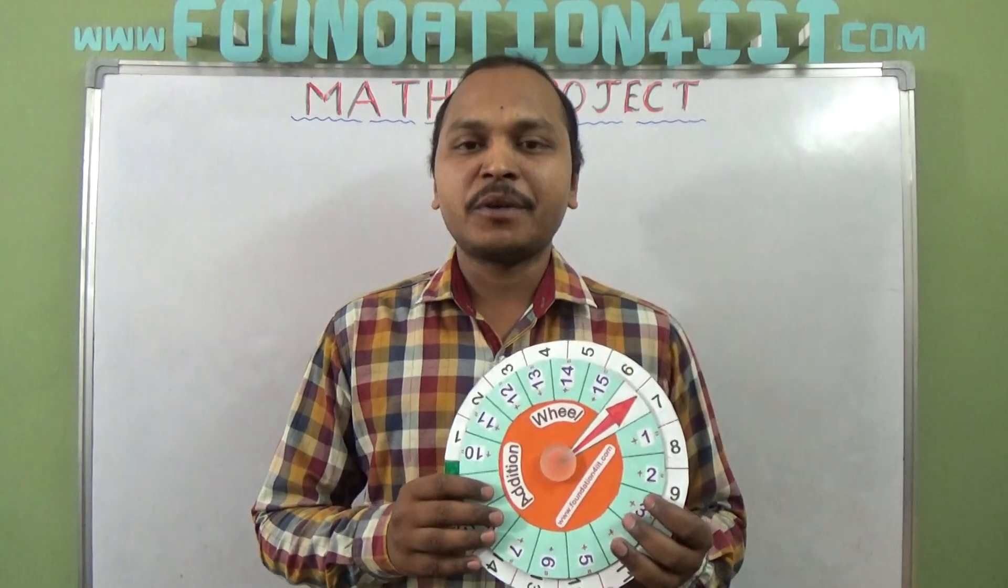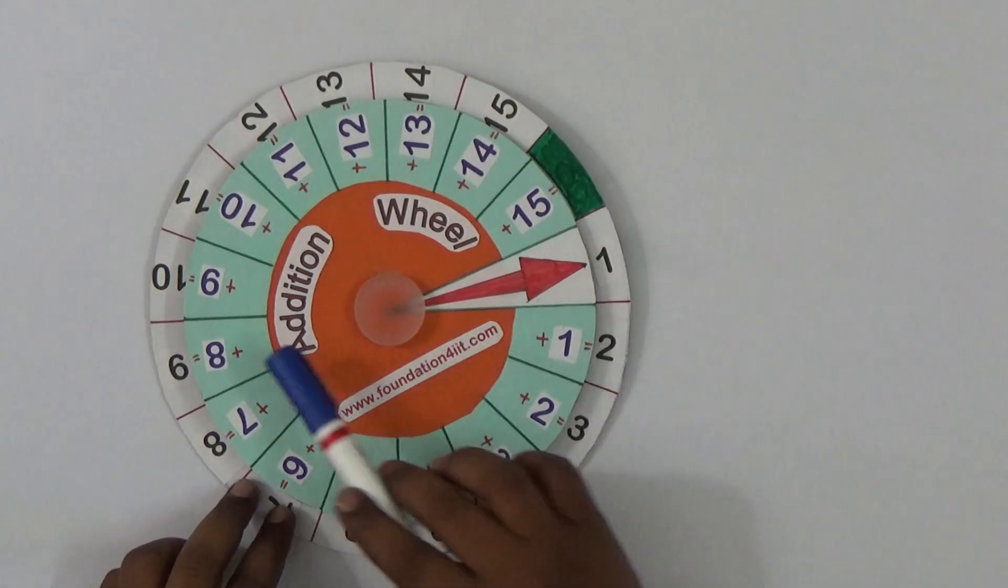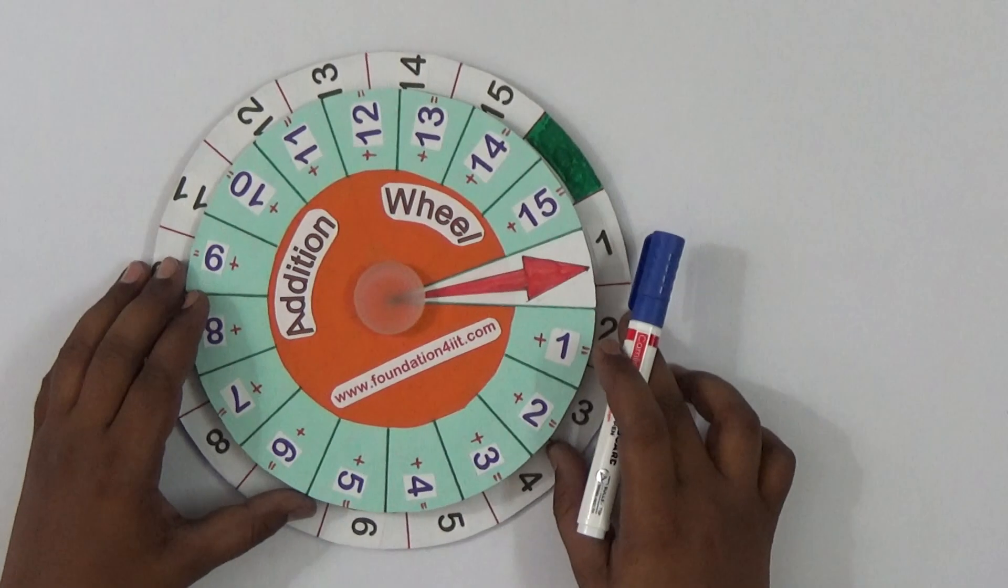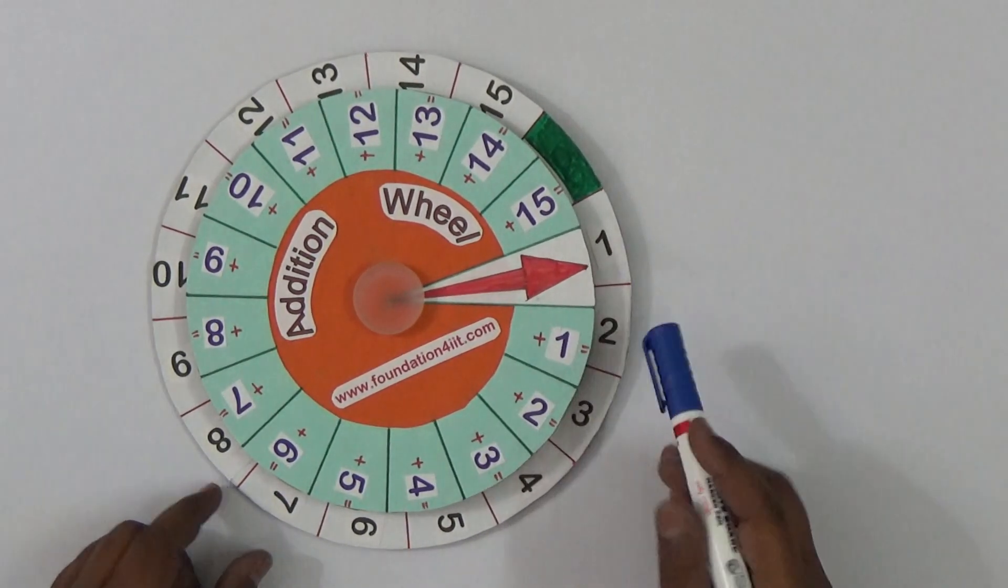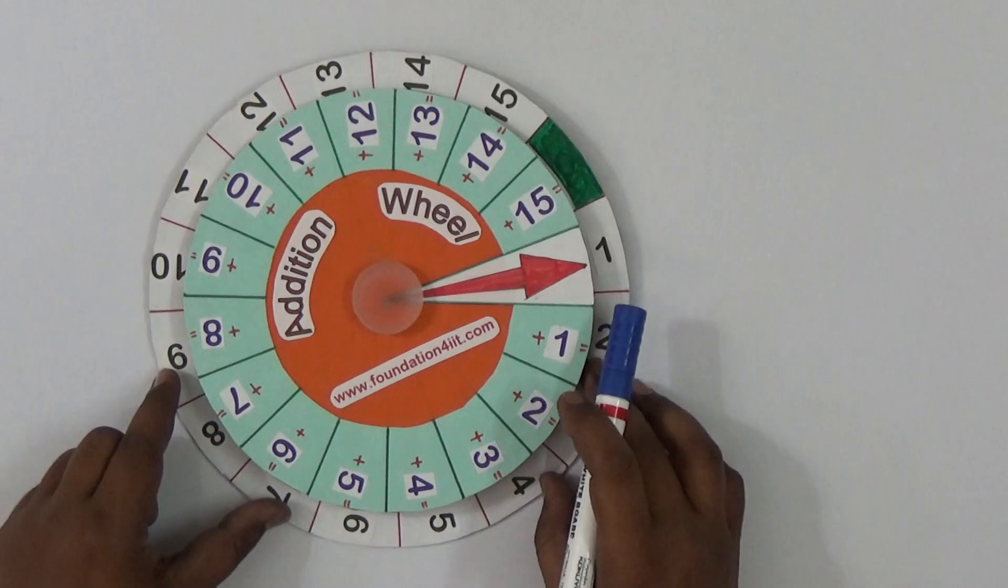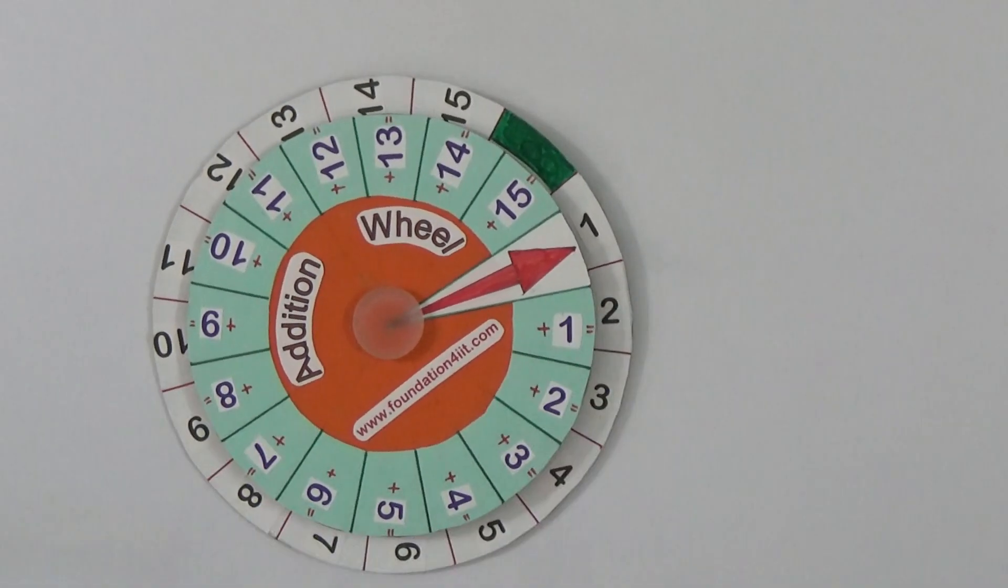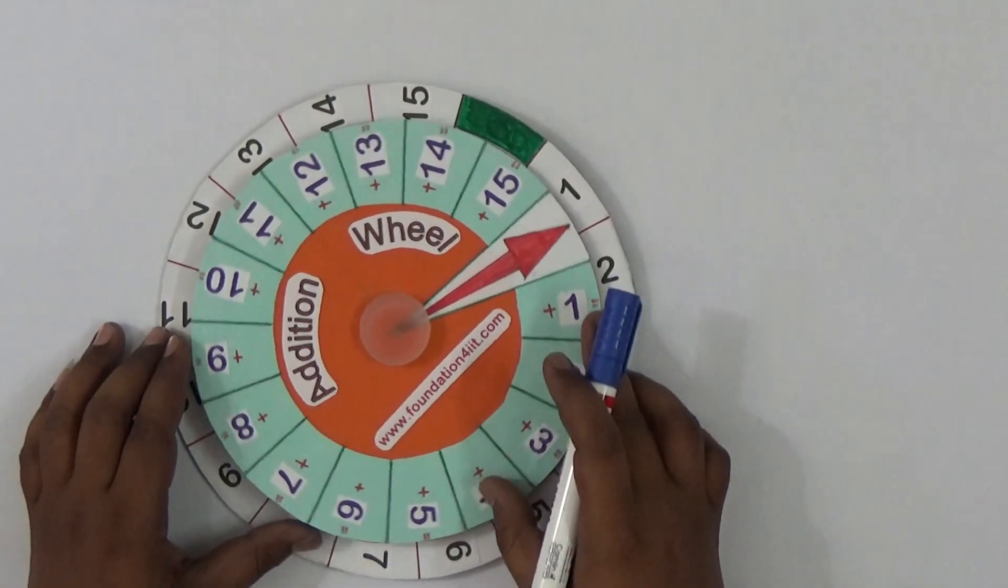I will explain this addition wheel project now. Using this project we can do any single digit additions, specially for primary children, especially for second class children. To make them understand very clearly about addition, we can use this. So let me show you here.